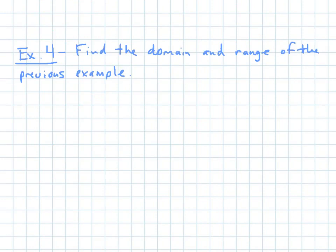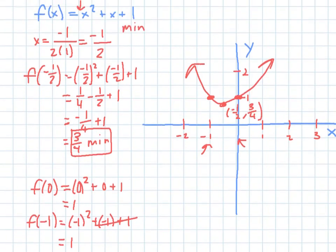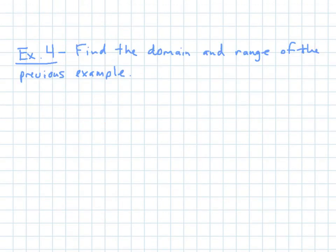Here I want to be able to take the example, or find the domain and range of the previous example. So looking at this, it doesn't matter left or right what my x is, because I'm going to continue to go out. There's no restrictions on what I can plug in for x. So then when I go back to this, my domain, and remember we put stuff in interval notation. So because it's all reals, it'd be from negative infinity to infinity.